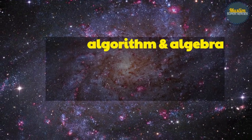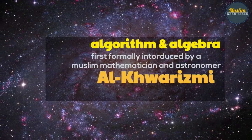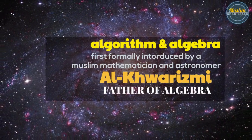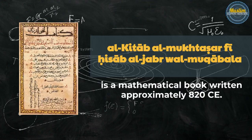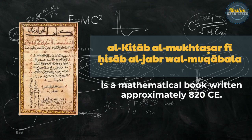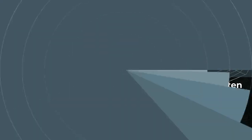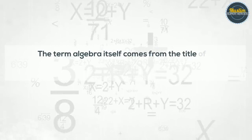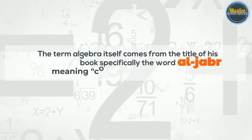Algorithm and Algebra were first formally introduced by a Muslim mathematician and astronomer Al-Khwarizmi, also called the Father of Algebra. Al-Jabr al-Muqabala is a mathematical book written approximately 820 CE by Al-Khwarizmi. The term algebra itself comes from the title of his book, specifically the word 'al-jabr,' meaning completion or rejoining.